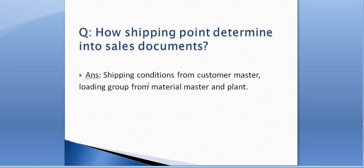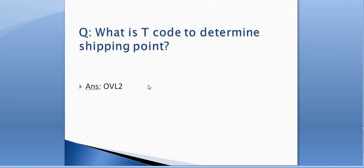How is a shipping point determined for sales documents? It is determined by three factors: shipping conditions from the customer master, loading group from the material master, and plant. What is the T-code to determine shipping point? It is OVL2.